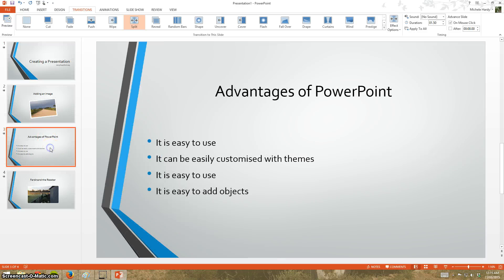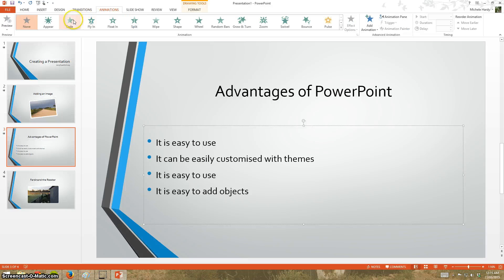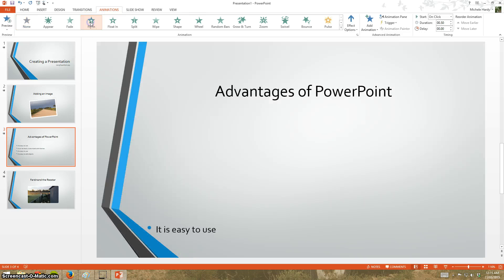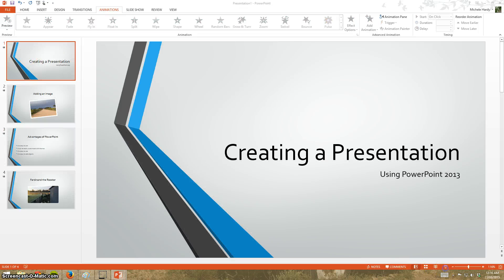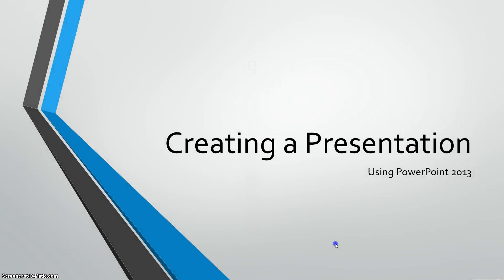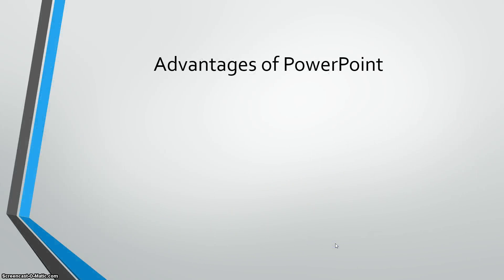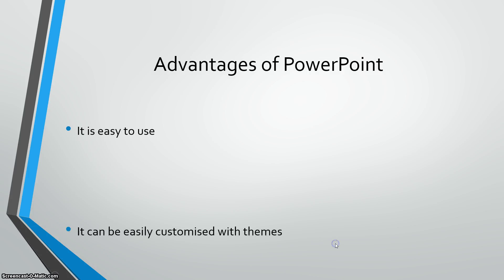You can get more complicated by doing things like clicking on a list and animating it by choosing an animation. Do remember that less is more — don't go too overboard. I'll just show you — we'll go with the Fly In, and you can see that each item will fly in independently. I then run the presentation from the beginning and click through each one.